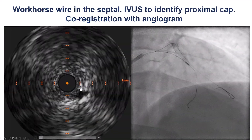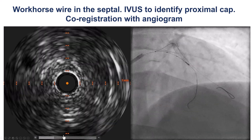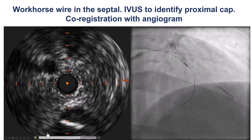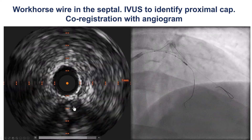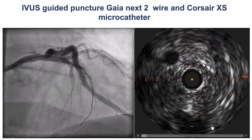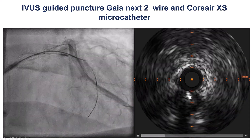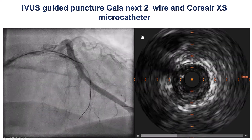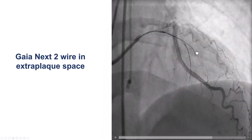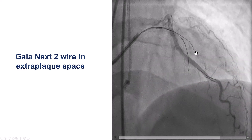We performed intravascular ultrasound after placing a wire into the second septal branch. As the IVUS pulls back, we can see the LAD chronic total occlusion, which helps identify the location of the proximal cap. Based on this, we attempted to puncture the proximal cap with a Gaia Next 2 wire, which seemed to be going into the right place. However, on ipsilateral injection, we can see that the wire is not dancing together with the vessel — it is in a different space.